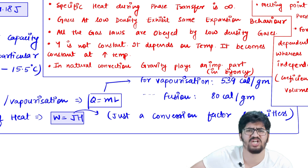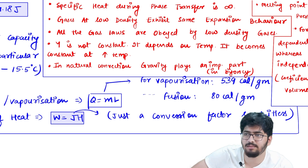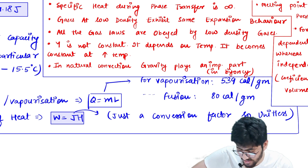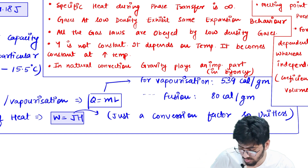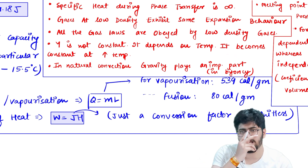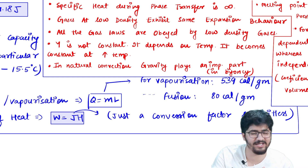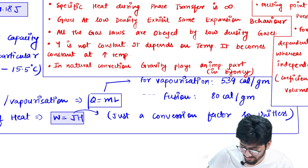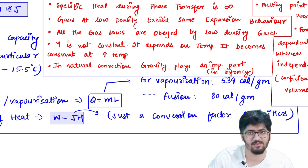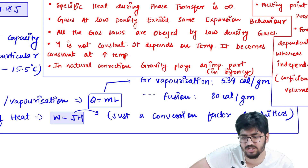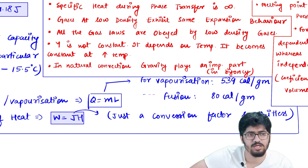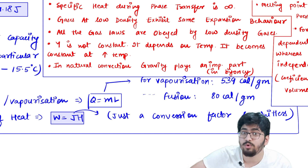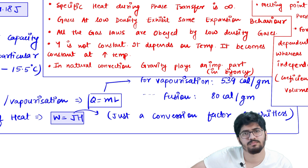A theoretical question in JEE Mains could ask: is γ (coefficient of volume expansion for gases) constant? The options might be: constant, not constant, constant only at high temperature, or none of the above. The correct answer is that γ is not constant — it depends on temperature. It becomes effectively constant only at higher temperatures. So the answer is: constant only at high temperature.